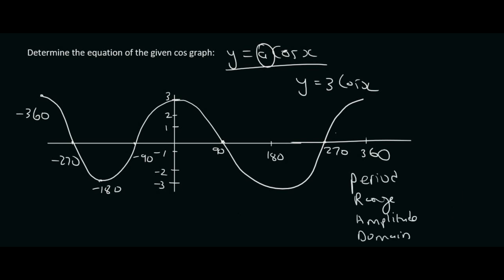So let's take a look at period, range, amplitude, and domain. So the period of a cos graph in grade 10 is always 360. The range, well that's your y values, and we can see that the lowest value is minus 3 and the highest value is 3.